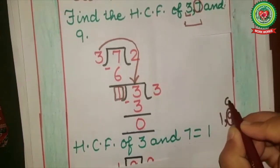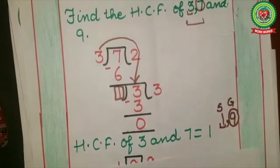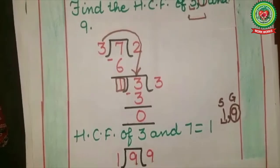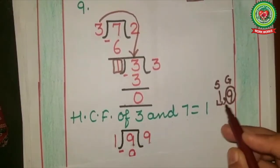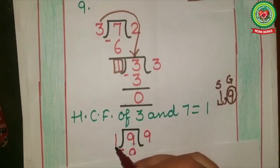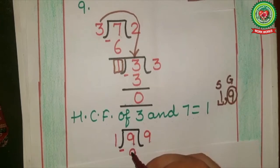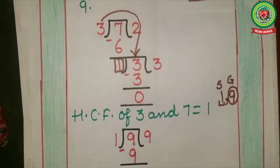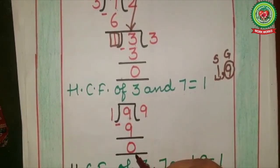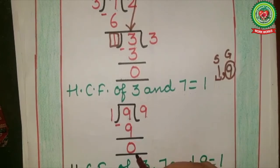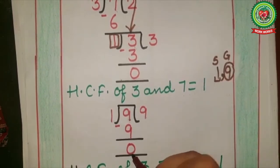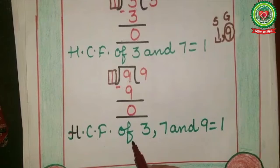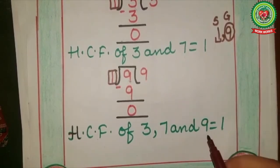9 is greater and 1 is smaller. So the smaller number, 1, will become the divisor and the greater number, 9, will become the dividend. Now check: does 9 come on the 1 times table? Yes, 9 comes on the 1 times table — one nine is 9. Next step: 9 minus 9 equals 0. Remainder is zero, so we will not divide again. The divisor of this division is the HCF. Therefore, HCF of 3, 7, and 9 is equal to 1.